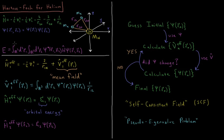Hartree-Fock introduces an effective Hamiltonian for each individual electron. For electron one, the effective Hamiltonian it feels is its kinetic energy, negative one-half del one squared, plus its attraction to the nucleus, minus two over r1n, plus an operator V-effective — the effective potential energy it feels at all locations in space.